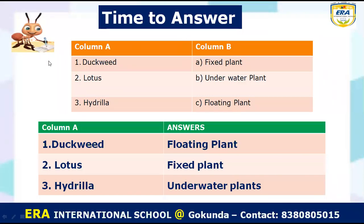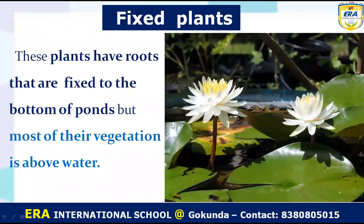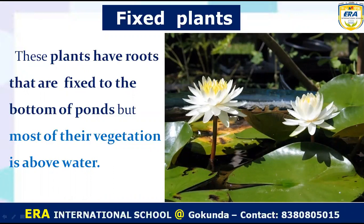Now it's time to answer. There is a column A and column B that we have to join. Duckweed is a floating plant. Lotus is a fixed plant. And hydrilla is an underwater plant. In the fixed plant — you can see the lotus plant — the roots are under the water, but the stem, flower, and leaves are above the water. The plants have roots fixed to the bottom of the pond, but plant parts such as stem, flower, and leaves are above the water. Such plants are called fixed plants.